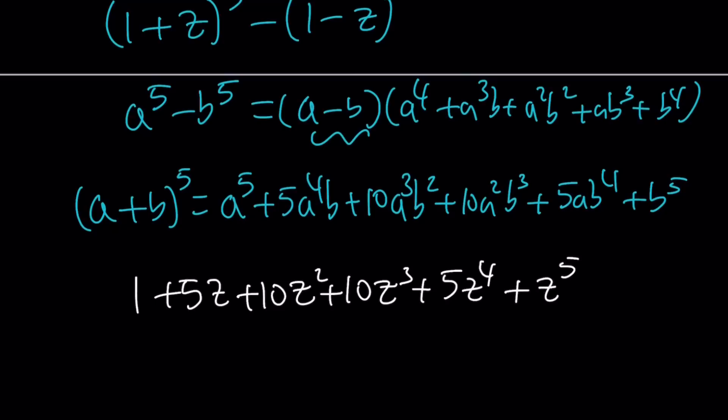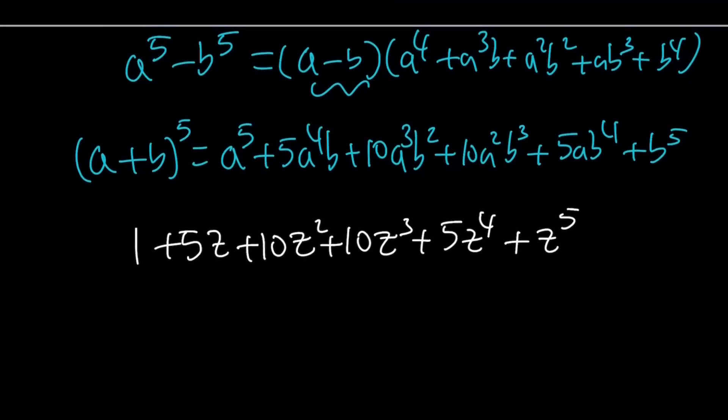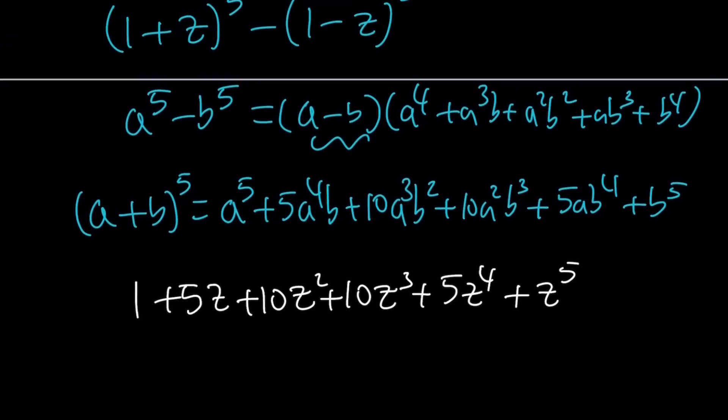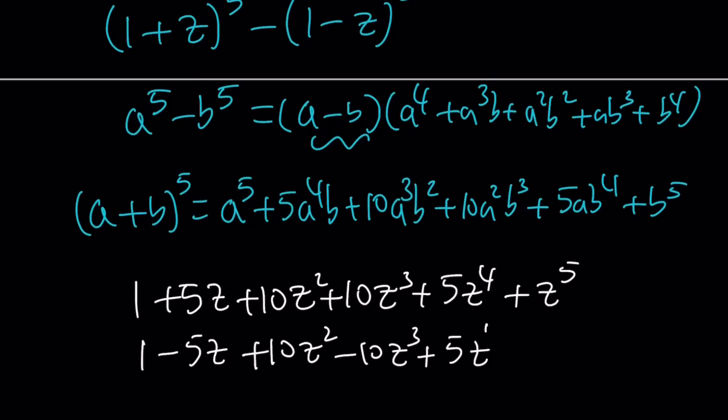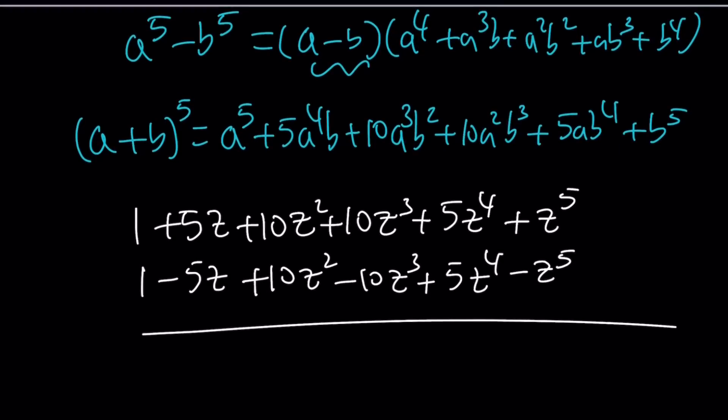And then with (1-z)^5, we can write it as pretty much the same thing, except these are going to be minus signs. So the sign will alternate like this, and of course, this is going to be a negative one. And we're supposed to subtract it, so to be able to subtract these two expressions, let's negate the second one and then add them.